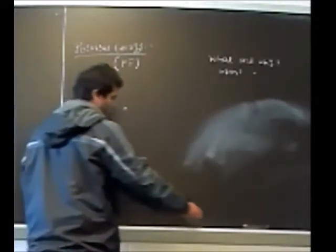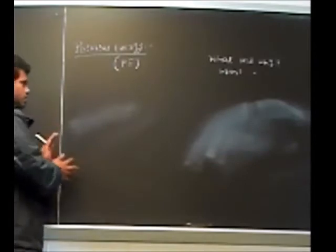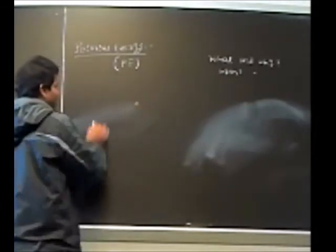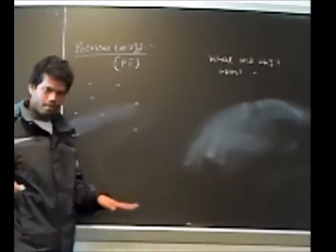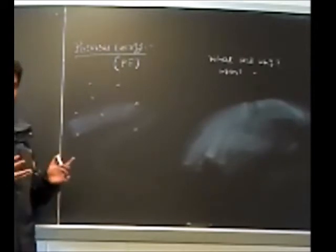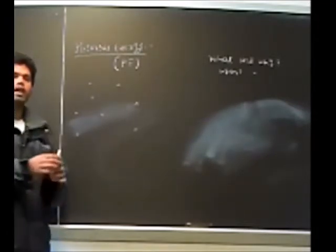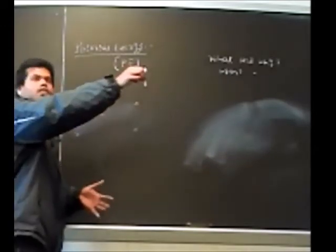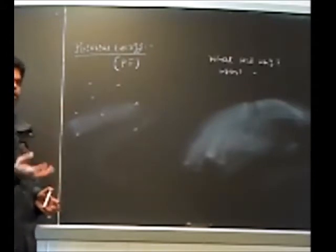Why does potential energy come into picture? Suppose this region of space has a force field, meaning there is a force acting at every point. An example is the surface of Earth, where we have gravitational force of attraction. If I place this chalk piece anywhere in space, it suffers a downward force and accelerates downward. Such a field where force exists is called a force field.